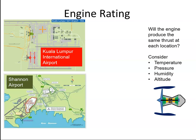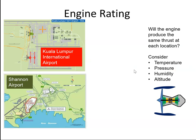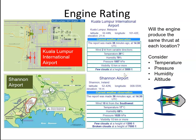Now, let's consider an aircraft taking off from either Kuala Lumpur or Shannon Airport. If we look at the specification here, it says we can get a takeoff thrust of 320 kN. But when we consider Kuala Lumpur and Shannon, we need to consider temperature, pressure, humidity, and altitude.